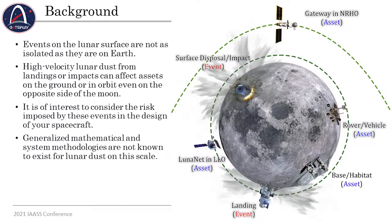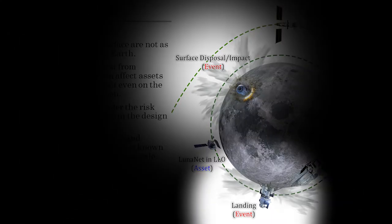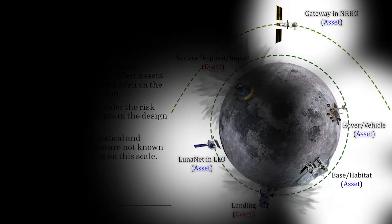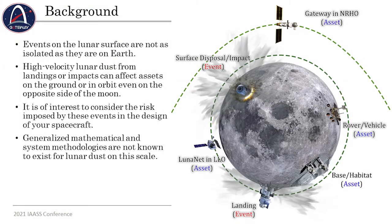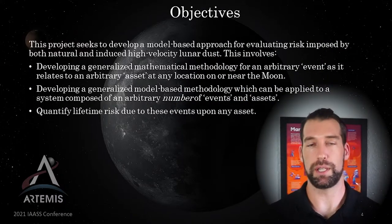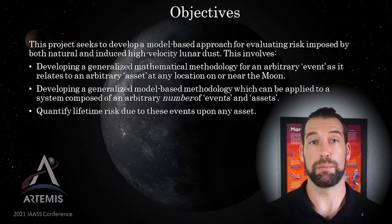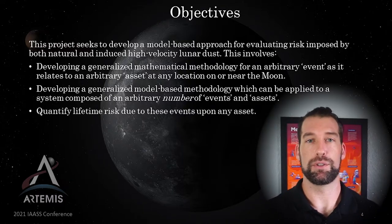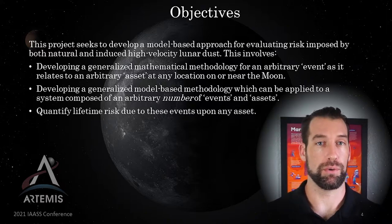In this project, what we're trying to do is model the lunar system as a whole. We've divided things into two categories: either it's an event, such as an impact event on the lunar surface or a landing in the South Pole or elsewhere, or an asset, such as a rover, a base, a satellite, or the Gateway. When we first set out with this project, no generalized mathematical model existed for interaction between any given asset and event. We had three objectives. First is to develop a mathematical model that can generalize exactly that — how an event on the surface can affect anything else on the lunar surface or in orbit.